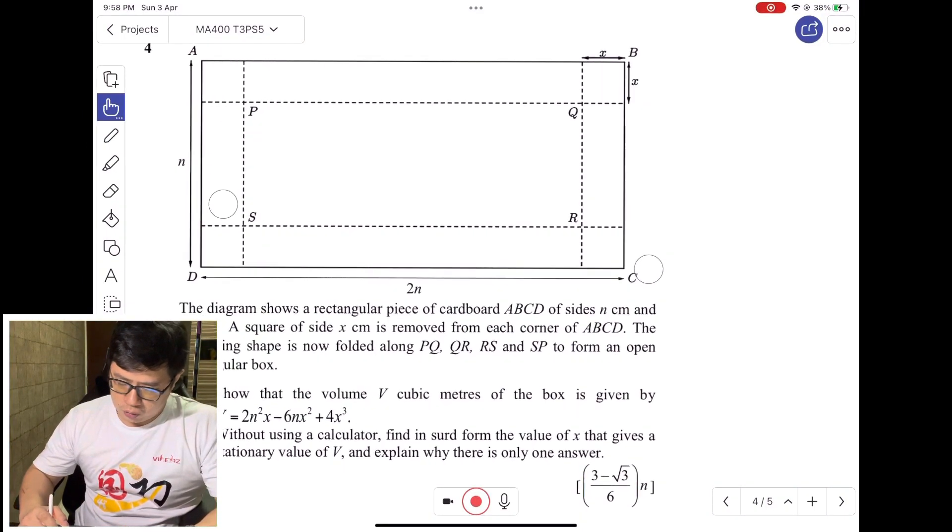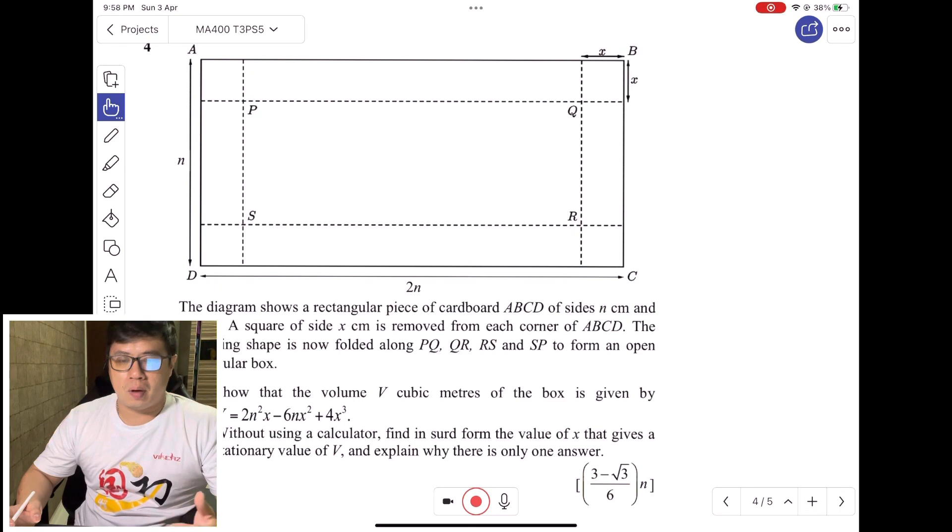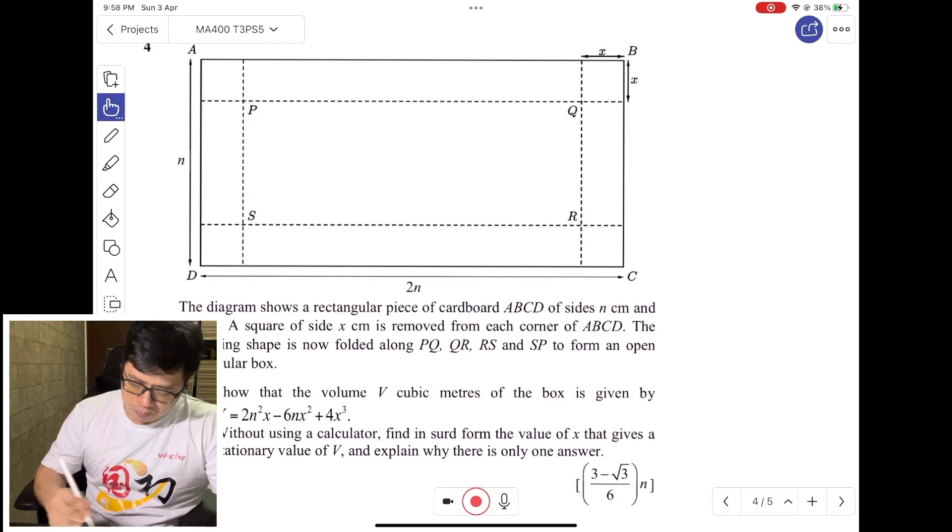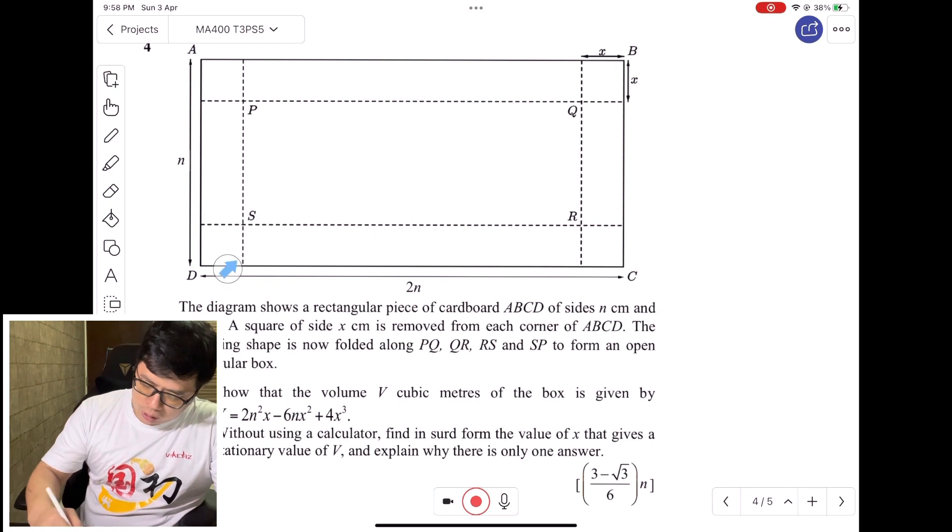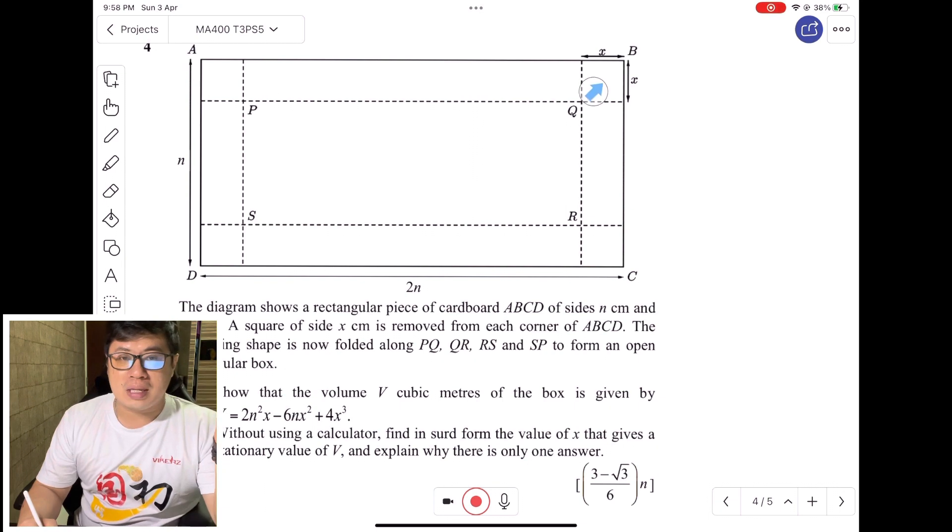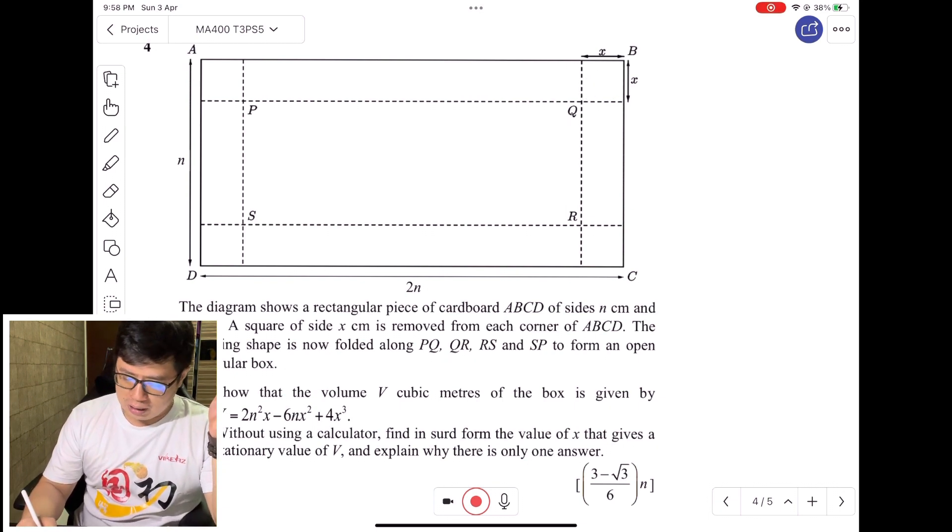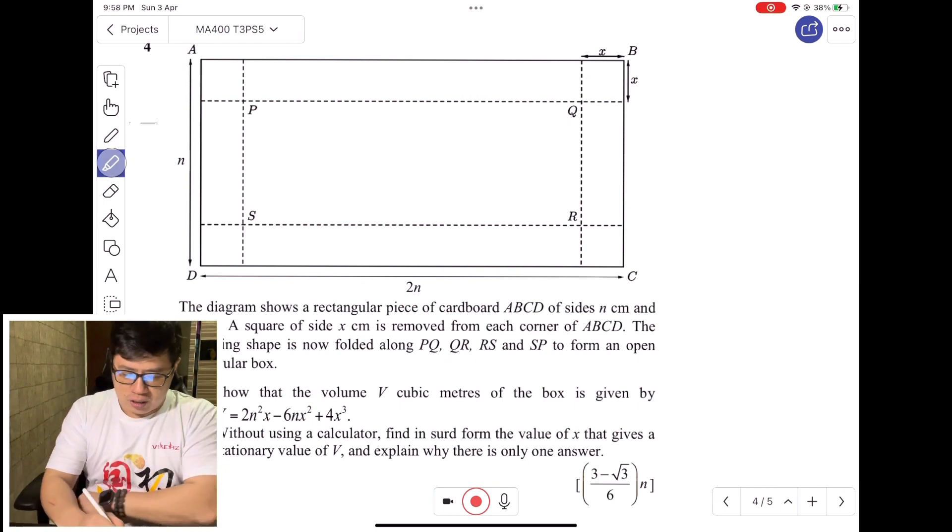For this question, we are looking at a rectangular piece of cardboard ABCD of size N by 2N. Then we cut out squares, just like we do in origami and handicraft, cutting out the four corners of the box.